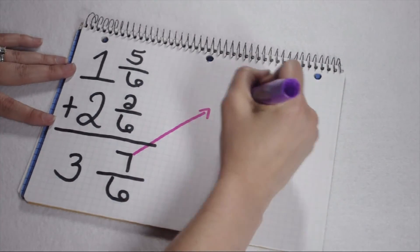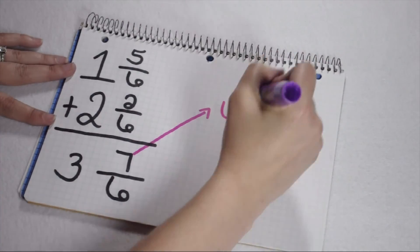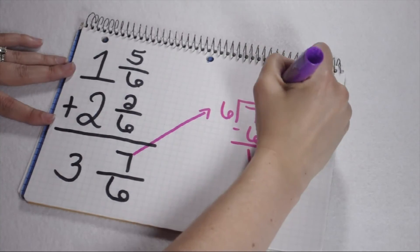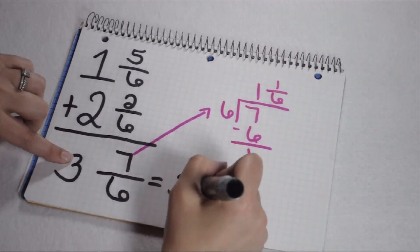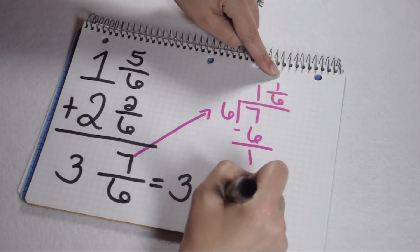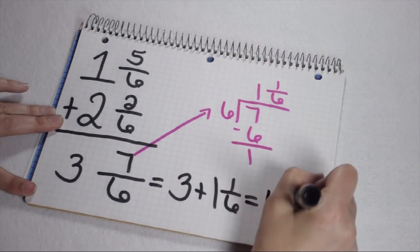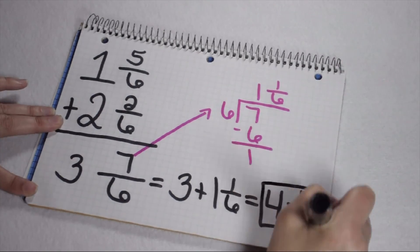So, we're going to have to make that into its own mixed number. 6 goes into 7 once. I have 1 left over. That becomes 1 sixth, which means my 3 plus my 1 and 1 sixth to give me a total of 4 and 1 sixth.